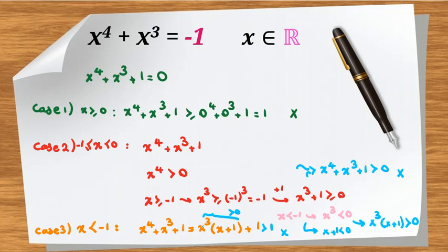We've considered all cases: x greater than or equal to 0, x between negative 1 and 0, and x less than negative 1. In all cases we proved that x to the 4 plus x cubed plus 1 is never zero, so this equation has no real number solutions.